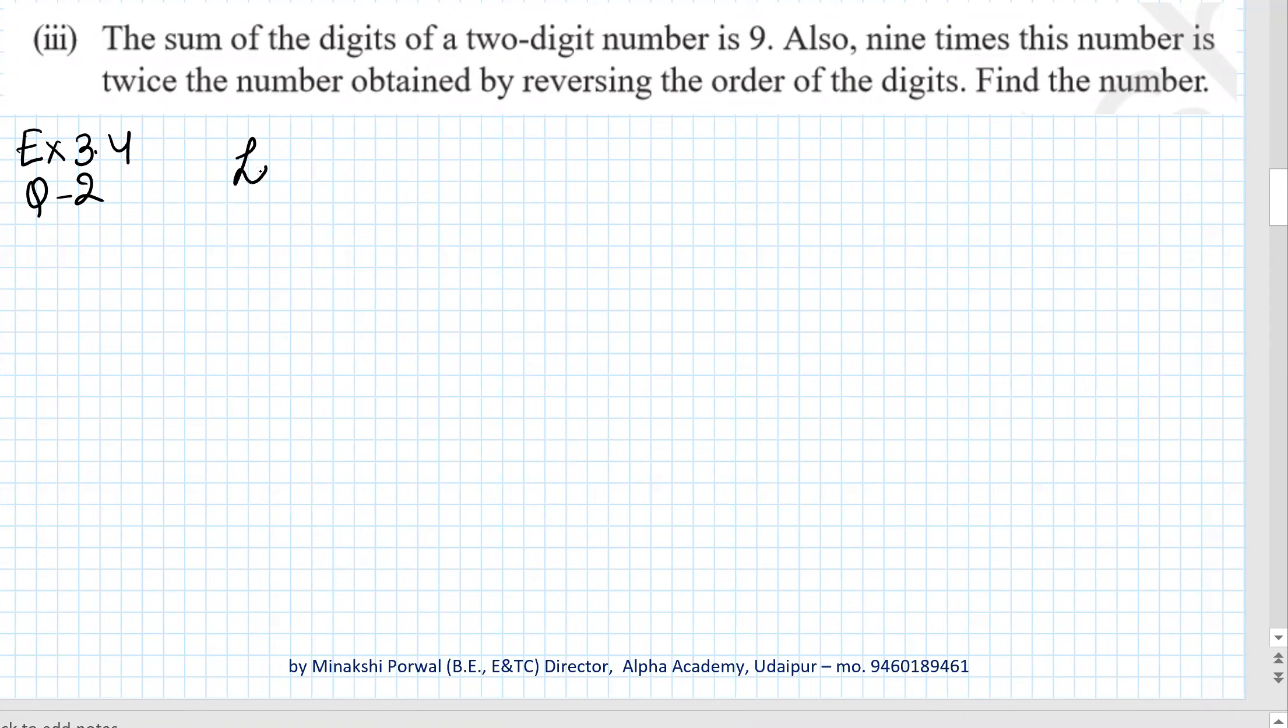Let units digit equal y. Tens digit equals x. Now in the question it is given sum of the digits is 9. That means x plus y equals 9.